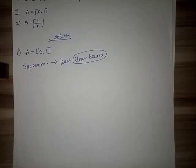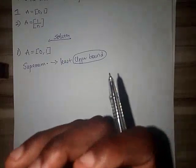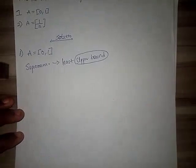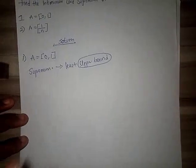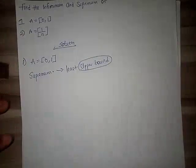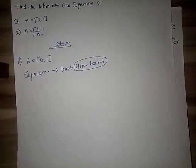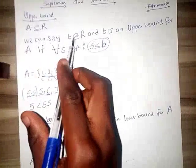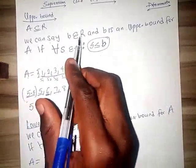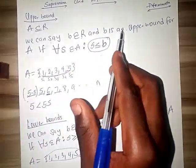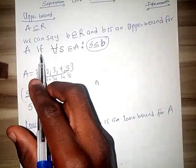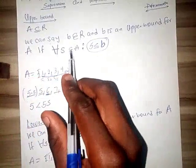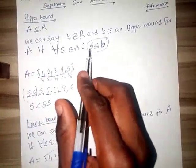Let me define what supremum is so from that you have basic knowledge of what I'm talking about. When we define upper bound, we can say b is a member of real numbers and b is an upper bound for A if for all s is a member of A such that s is less than or equal to b.